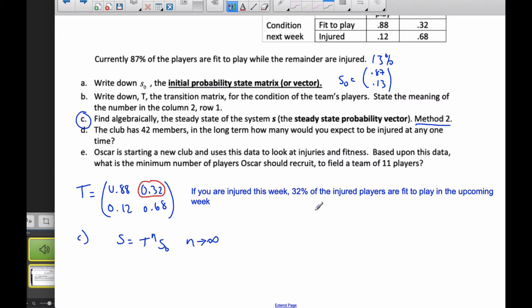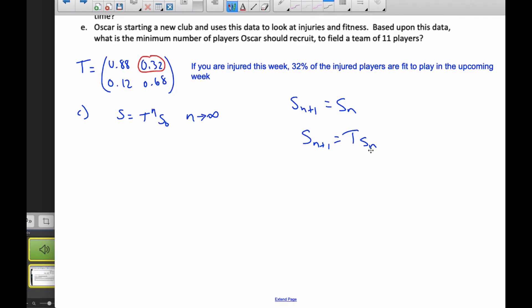So what a steady state probability vector means, or just a steady state of this Markov chain system, I know that eventually S_N+1 is equal to S_N. They end up being the same. And so what I also know is that if to get S_N+1, S_N+1 is equal to T times S_N.